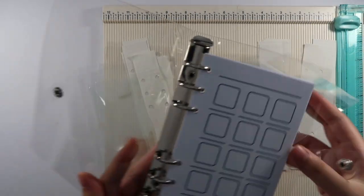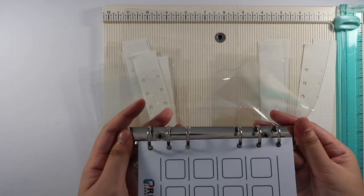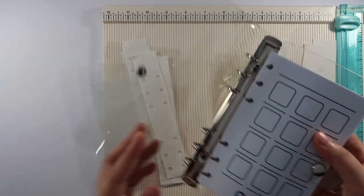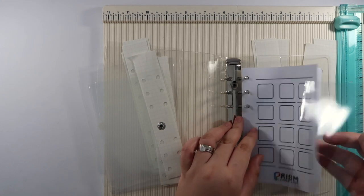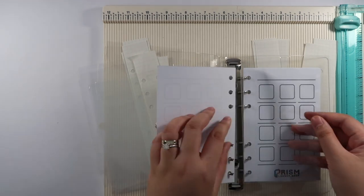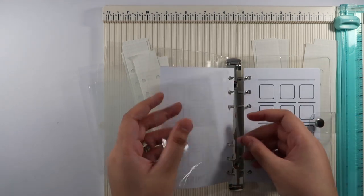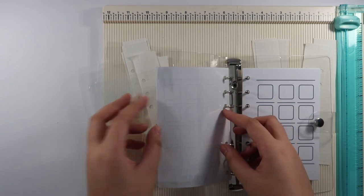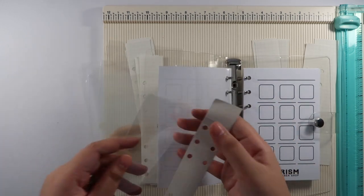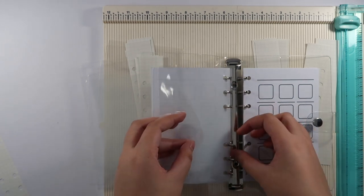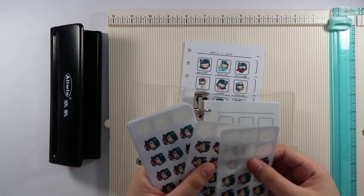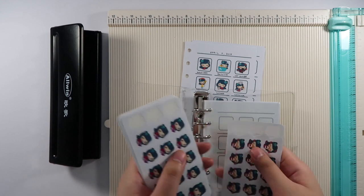To assemble, just open the rings of the binder. Then insert the punched papers and plastic which will hold the stickers. Make sure that the top part is the open side. Then just insert the stickers back to back.